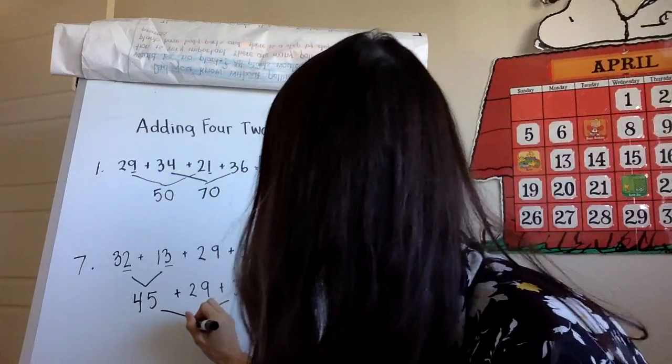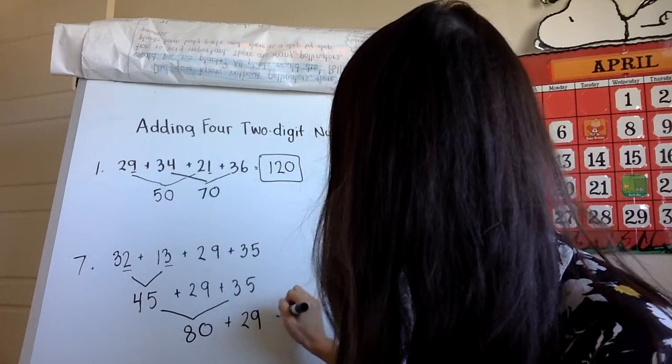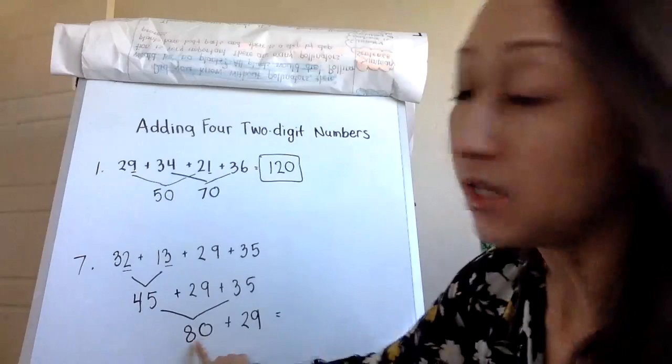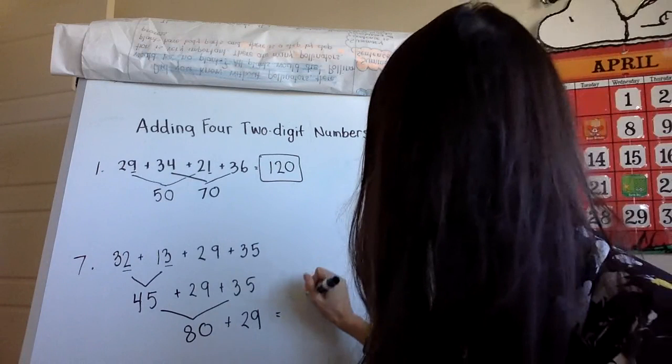The last thing I'm going to do is add the other number that I haven't added yet. So now I have 80 + 29. I have 80 + 20. I know 80 + 20 is 100, and then add 9. So my answer is 109.